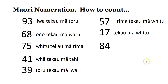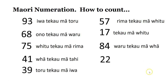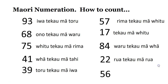What about eighty-four in Māori? Waru te kau ma whā — eight tens, add four. What about twenty-two? Rua te kau ma rua — two tens, add two. And the last one, fifty-six — rima te kau ma ono.